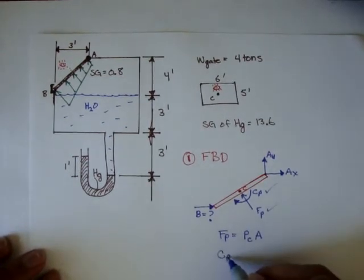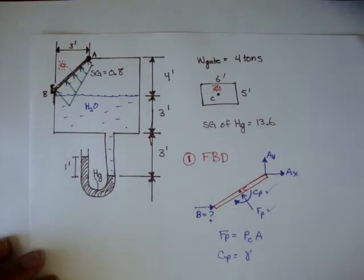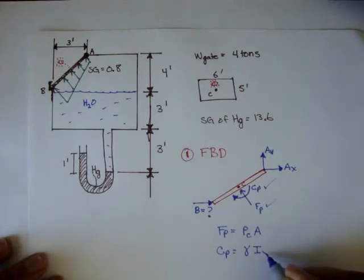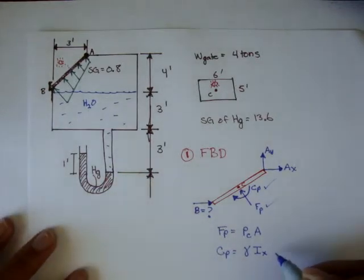And the couple, same thing, it's the specific weight of the liquid that's touching the gate, times IX, or the second area moment inertia, times cosine beta.